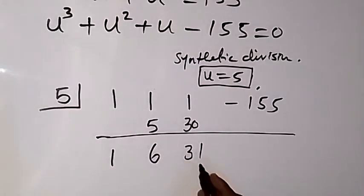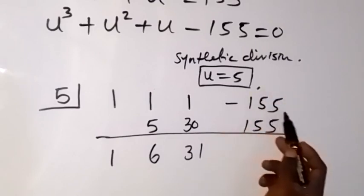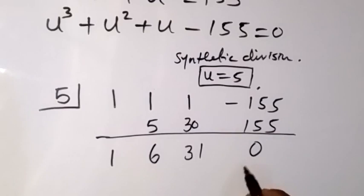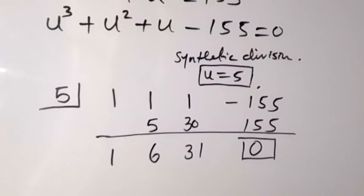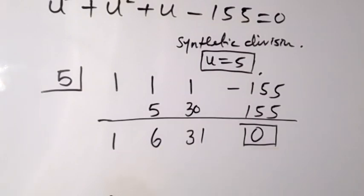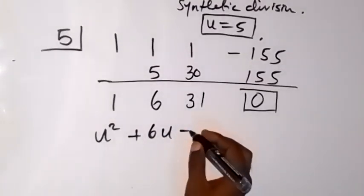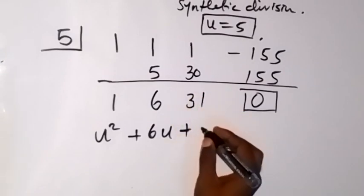One plus 30 is 31. Then 5 times 31 is 155. When we add these together, minus 155 plus 155, that's 0. This confirms that 5 is a root. What we have left will be a quadratic equation: u squared plus 6u plus 31 equals 0.